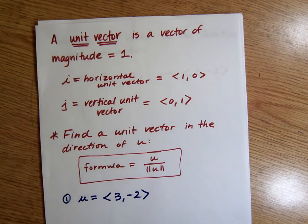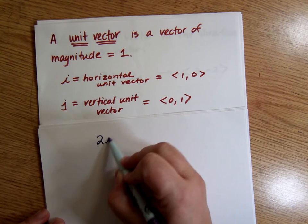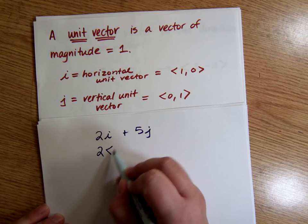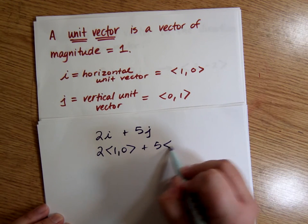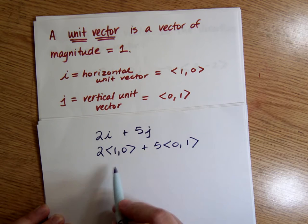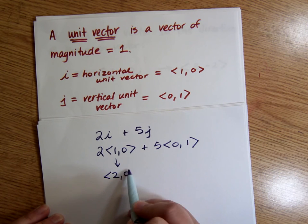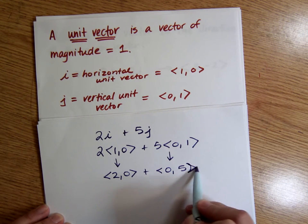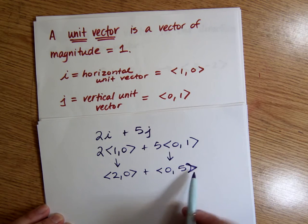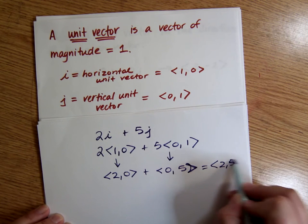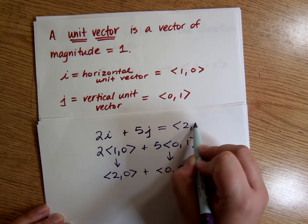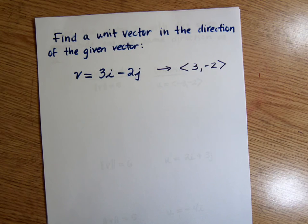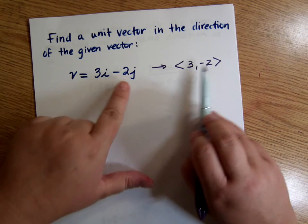So for instance, if I were to talk about 2i plus 5j, that means 2 times this plus 5 times this, and that would become 2, 0, and this would become 0, 5. And that should be that. 2, 0 plus 0, 5 is 2, 5. So that's what this means, is 2, 5. It's just another way of writing it. Okay, so when we look at this one, that's how we know this is just another way of writing 3, negative 2.